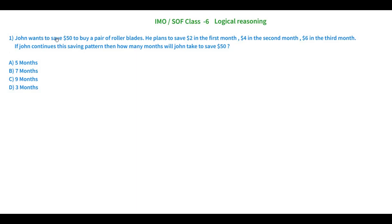The first question is: John wants to save $50 to buy a pair of rollerblades. He plans to save $2 in the first month, $4 in the second month, $6 in the third month. If John continues this saving pattern, how many months will John take to save $50? He keeps increasing his savings by $2 each month, and we have to find which month he will reach $50 or just above $50 so that he is able to buy his rollerblades.